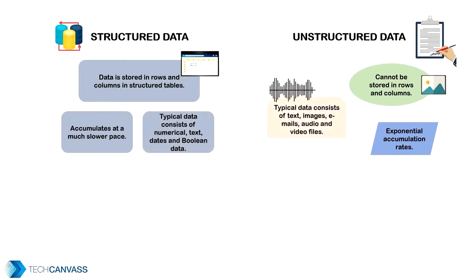The structured text is simple, like addresses and names. But the text in unstructured data is complex — for example, customer reviews that have to be analyzed to determine whether the sentiment is positive or negative. This is a complex analysis. Audio, video, handwritten documents, tweets, and so on all come under unstructured data.